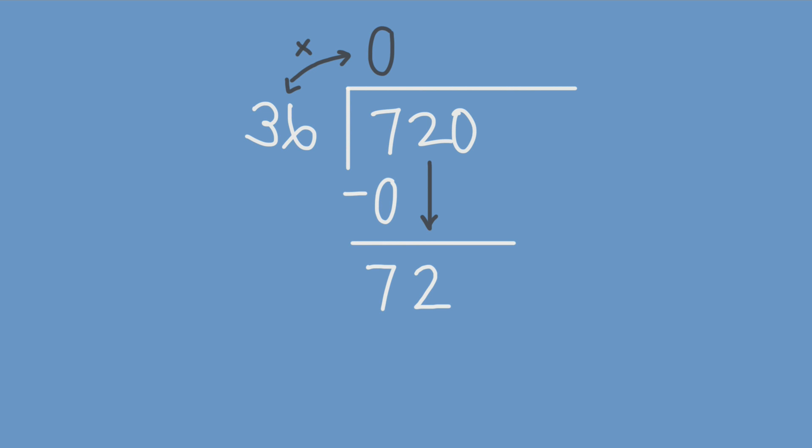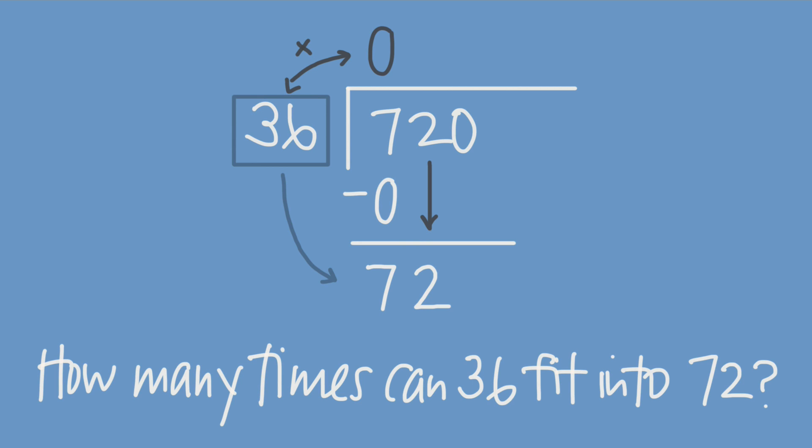7 minus 0 is 7. Next, we bring down the next digit of our dividend, which is 2, and at this point, we begin the process all over again. So the new question is, how many times does 36 go into 72 without going over? It definitely goes in at least once, but we might need to use the village scratchpad to figure out that 36 times 2 is actually equal to 72.